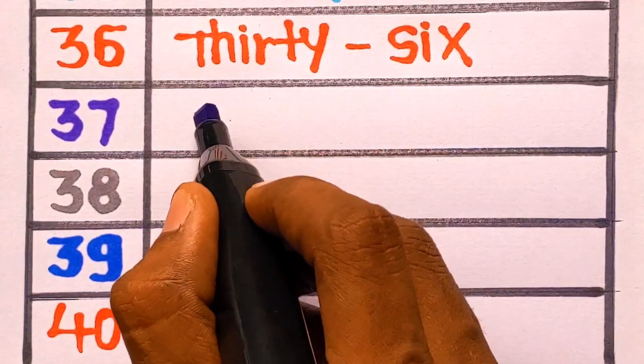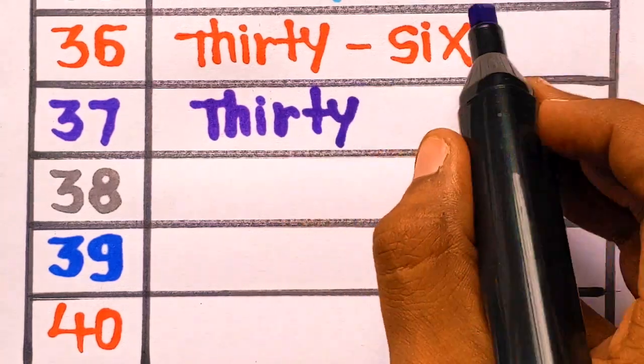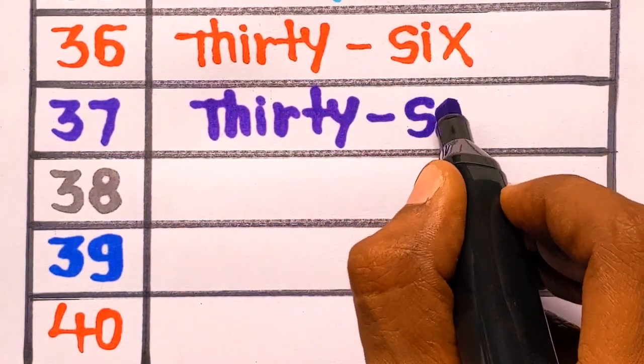37. T-H-I-R-T-Y, thirty. S-E-V-E-N, seven. 37, thirty-seven in violet color.